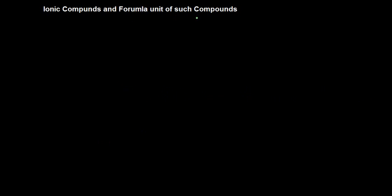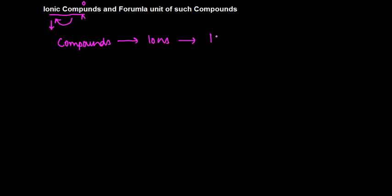Let's understand what ionic compounds are. We saw molecular compounds earlier, but ionic compounds are basically compounds which are made up of ions. Ions are the positively or negatively charged atoms, so compounds which are made up of ions are known as ionic compounds.